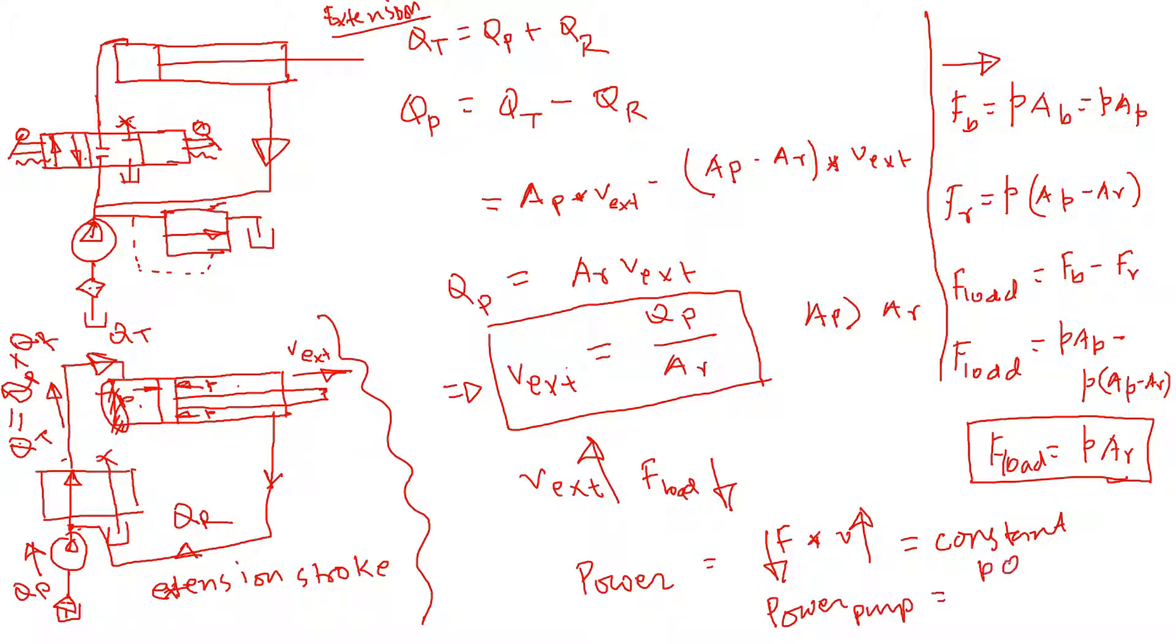Which is PQ divided by 1714, that is kind of fixed, that is the power of the pump. So we cannot just by increasing the velocity really get more power. Then the force carrying capacity decreases and vice versa. So that's one of the advantages of regenerative circuit: we can increase the velocity and then carry smaller load, or vice versa.